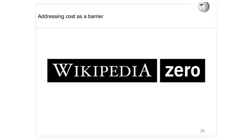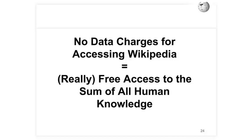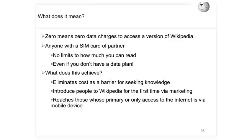Wikipedia Zero is the program to directly address the cost barrier. It means no data charges for accessing Wikipedia — truly free access to the sum of all human knowledge. Zero means zero data charges to access a version of Wikipedia. When you're a customer of a Wikipedia Zero partner, you get charged nothing. Anyone with a SIM card of a partner will have access with no limits on how much you can read, and even if you do not have a data plan, you will be able to access Wikipedia on your phone.